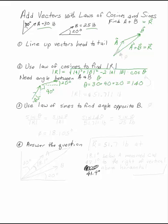So, we can plug 140 into the law of cosines, plug that into your calculator, and the length of R is 51.711 pounds. That's the length of the resultant.